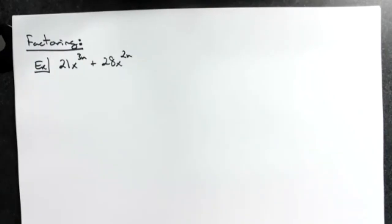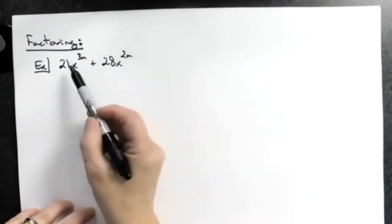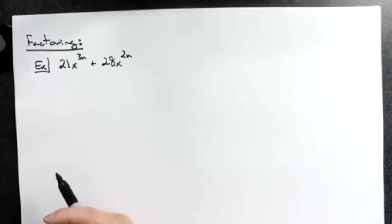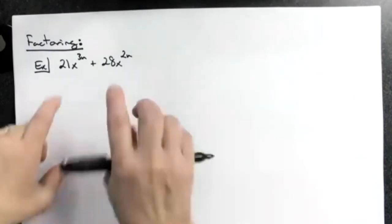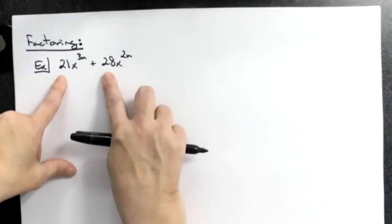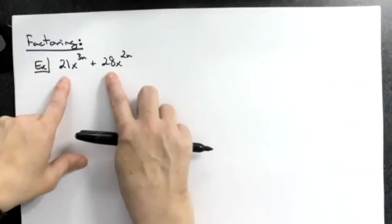Now I did just two terms here just to give a straightforward idea on how we're going to do this. You need to kind of find the greatest common factor here. So you'll look at the 21 and the 28 and you'll recognize the 7 as your greatest common factor there.